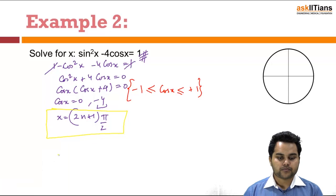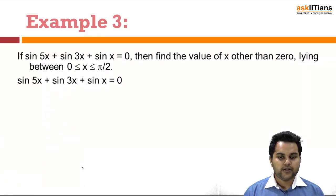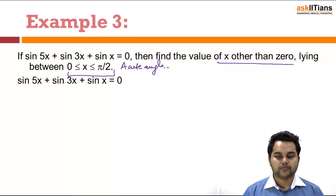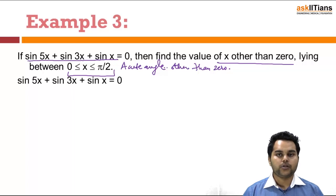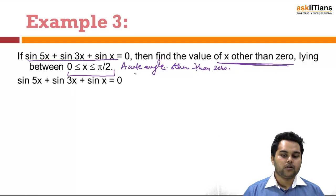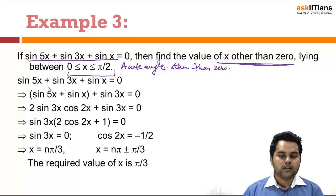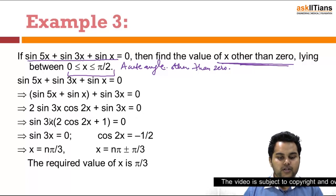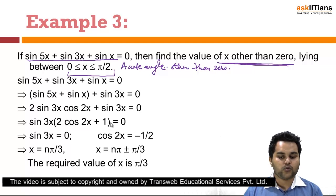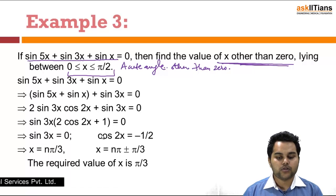Moving on to the next example. I have to find the value of x, other than 0, lying between 0 and π/2 (i.e., an acute angle). The equation contains just sine terms and the most default solution is x = 0, but we need solutions other than 0. Now, coupling sin 5x and sin 3x using sum-to-product gives 2sin(3x)cos(2x) + sin(3x) = 0. Taking sin(3x) as common: sin(3x)(2cos(2x) + 1) = 0, so sin(3x) = 0 or cos(2x) = -1/2.